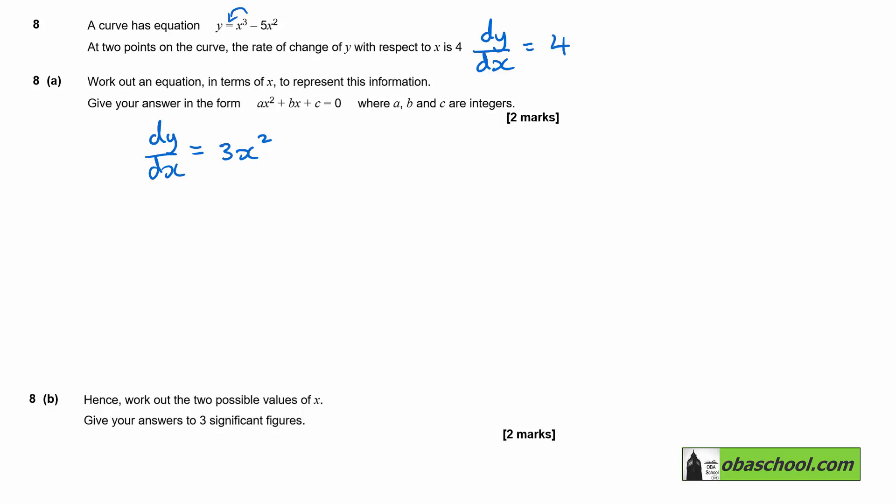Do the same thing for the negative 5x squared, 2 comes down in front and multiplies, and reduce the power from 2 to 1. So we want dy/dx to be equal to 4.